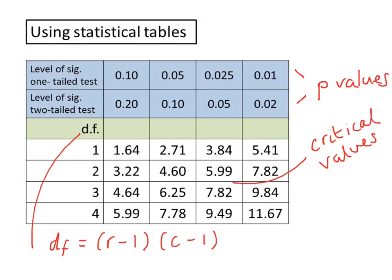These numbers are called critical values and we need our chi-squared value to be equal to or greater than one of these to reject the null. To use the table, we also need to know if we have a one-tailed test, which is when there's a directional hypothesis, or a two-tailed test for a non-directional hypothesis.